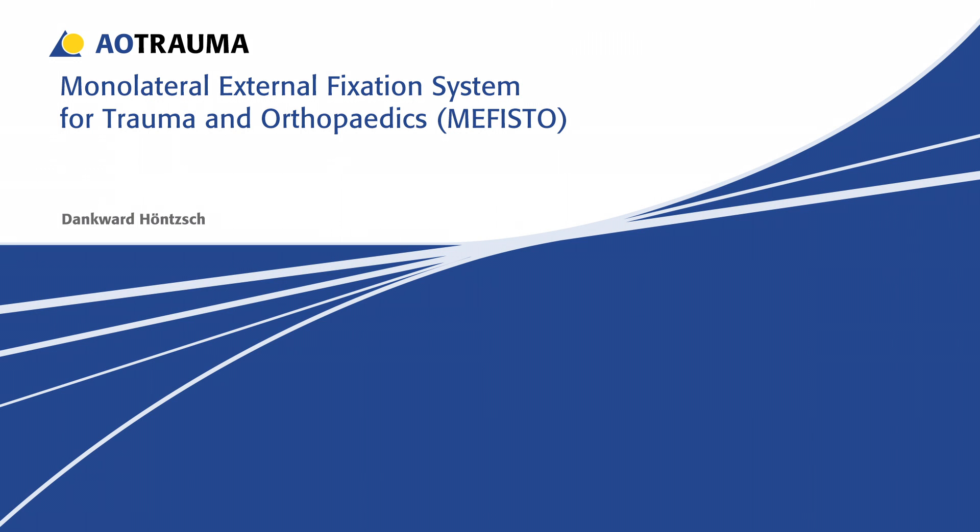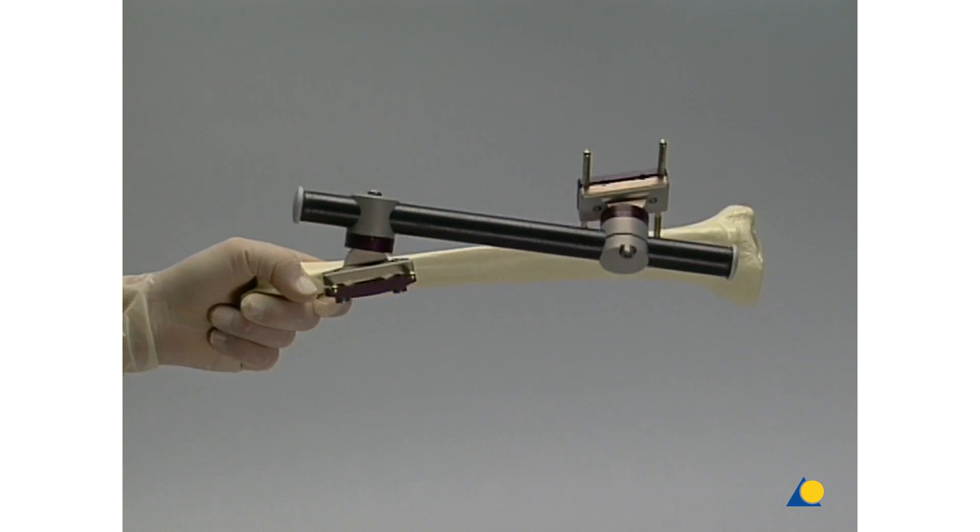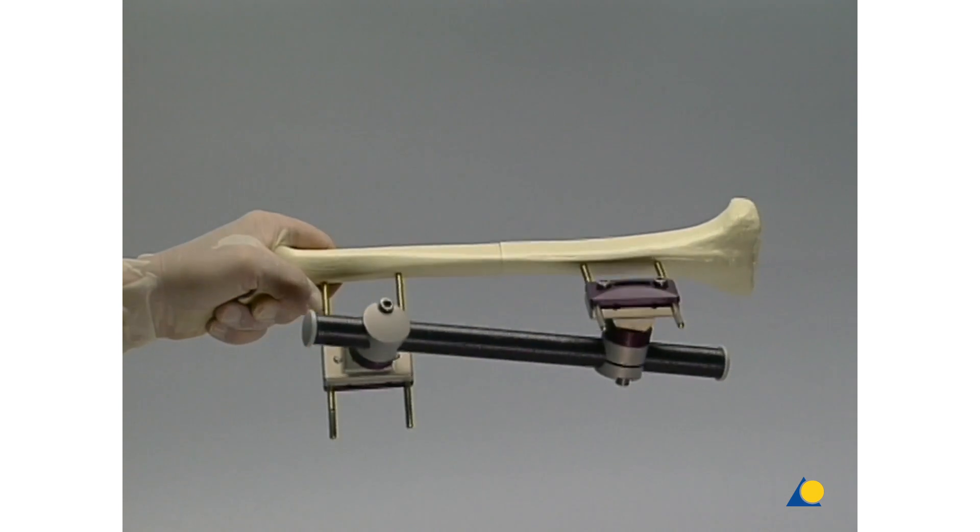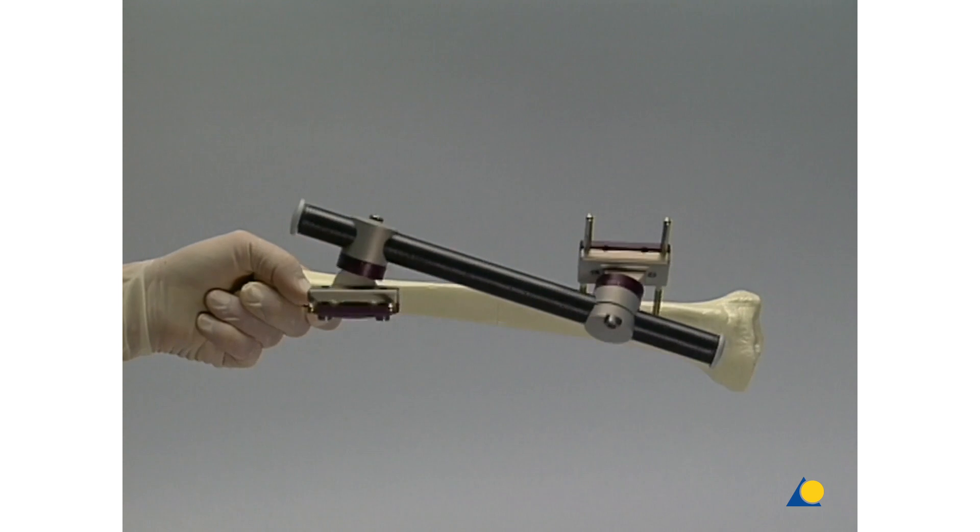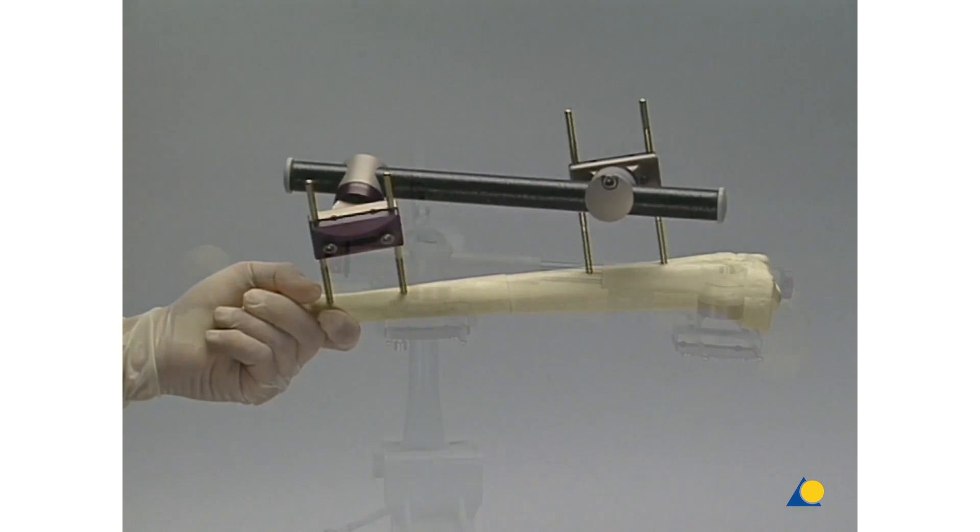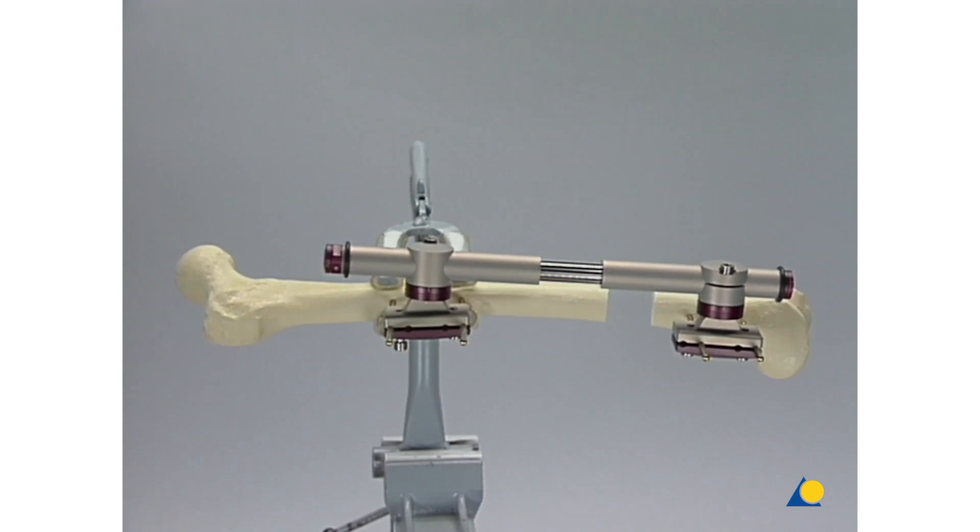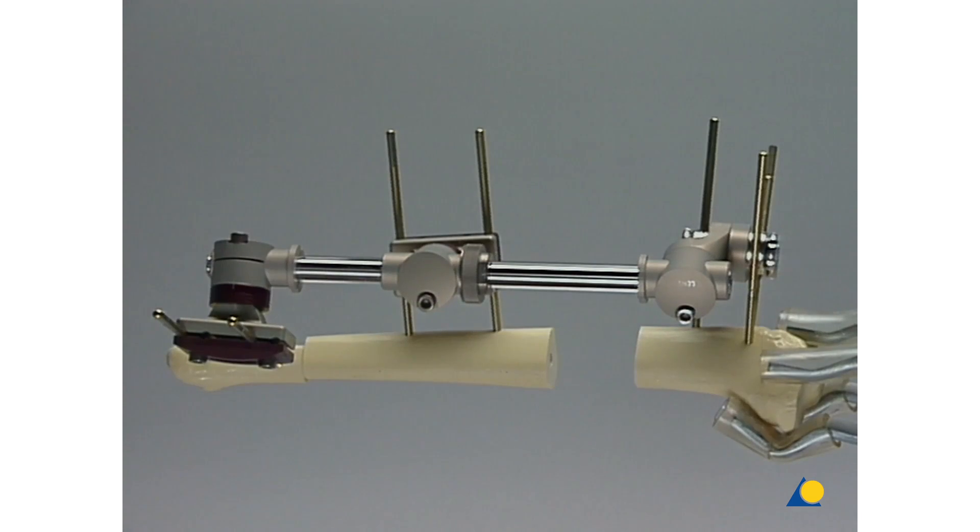The monolateral external fixation system for trauma and orthopedics, in short, Mephisto. Mephisto can be used for fractures and injuries of the entire musculoskeletal system and complex indications in reconstructive and orthopedic surgery, such as bone lengthening, segment transport, and angulation.